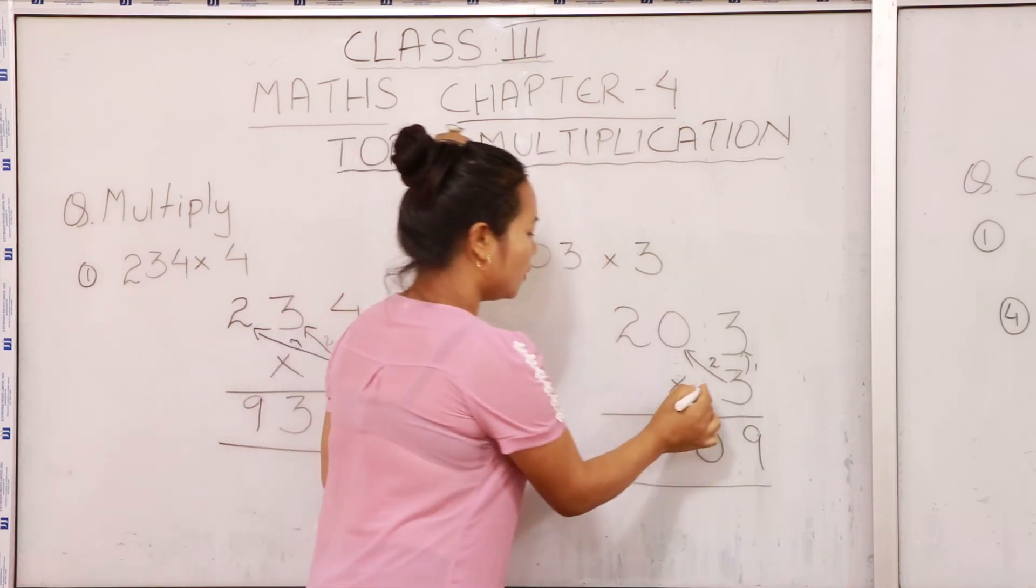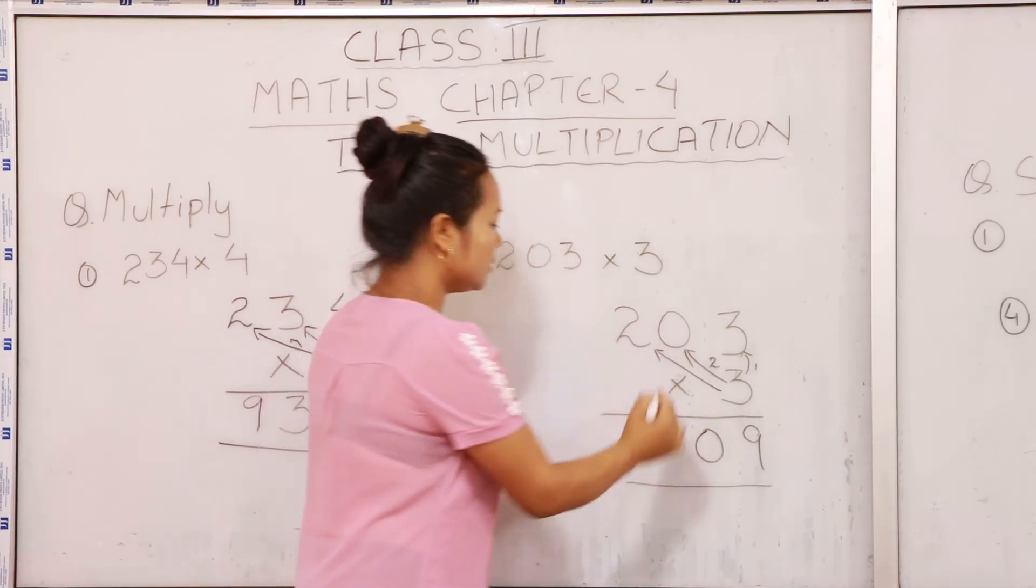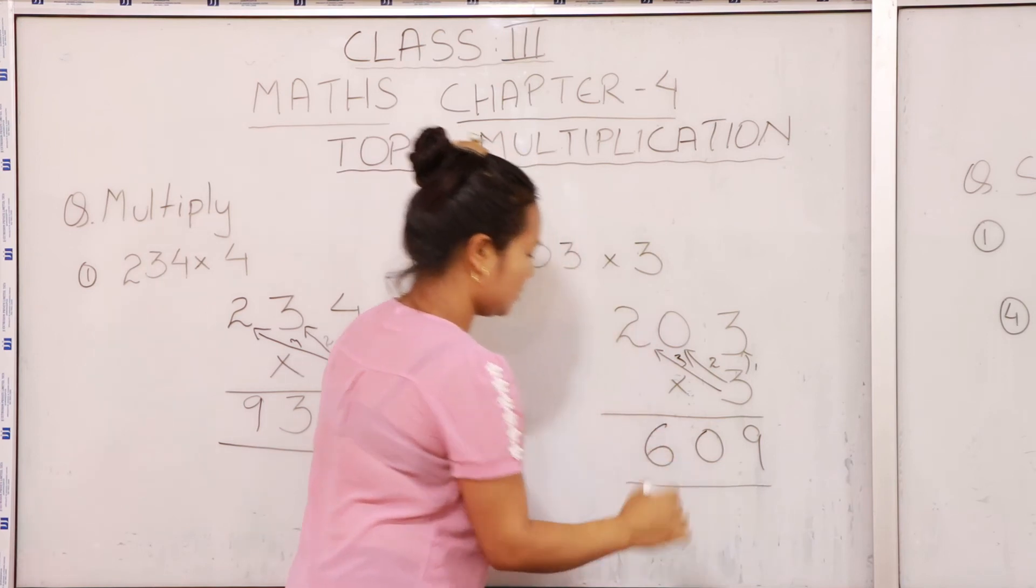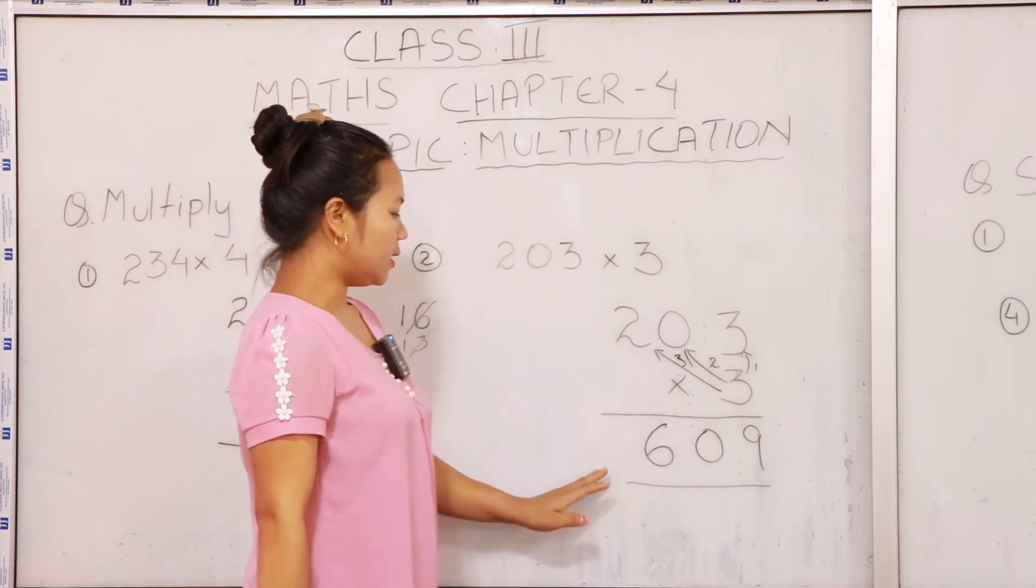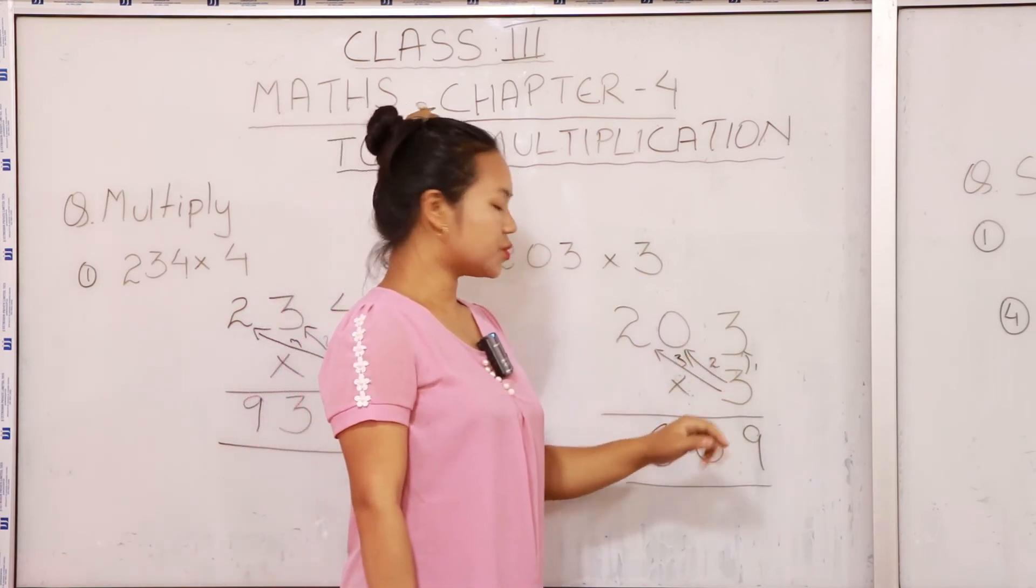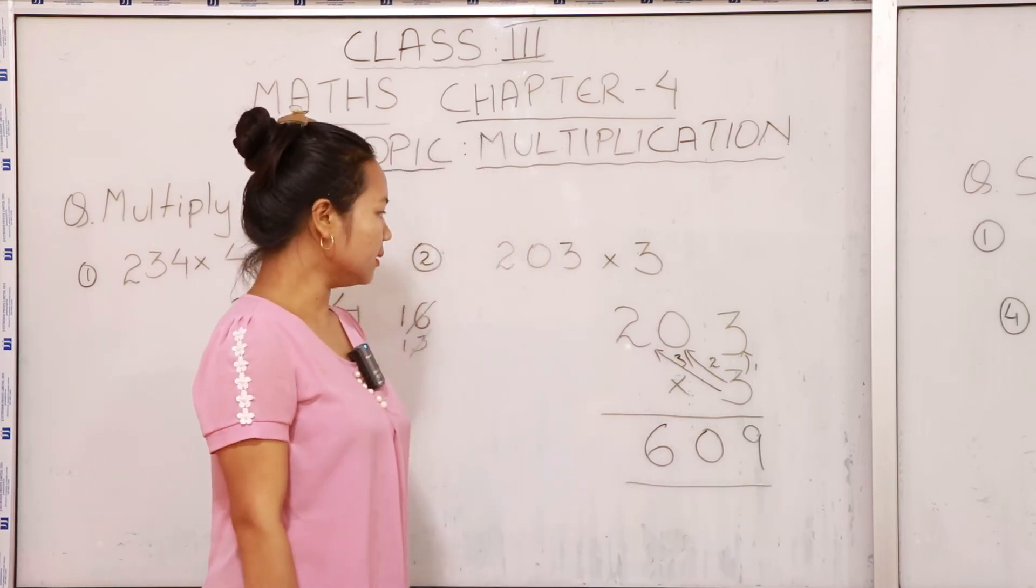And the third one is 2 and 3. That is 2 threes, or 3 twos are 6. So here the answer of the multiplication of 203 into 3 is 609.